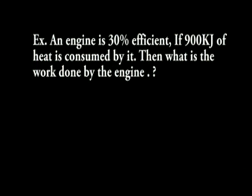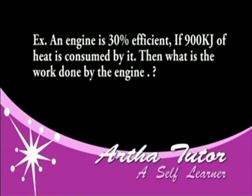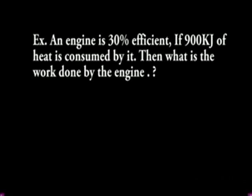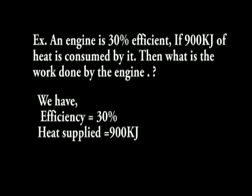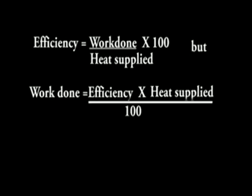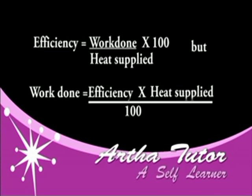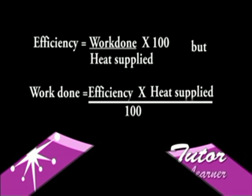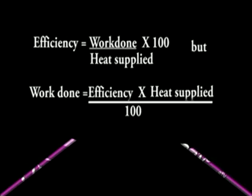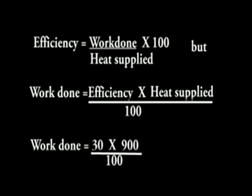It is usually expressed as a percentage: efficiency = (work done / heat supplied) × 100. Example: An engine is 30% efficient. If 900 kJ of heat is consumed by it, then what is the work done by the engine? We have efficiency = 30%, heat supplied = 900 kJ. Therefore, work done = (efficiency × total heat supplied) / 100 = (30 × 900) / 100 = 270 kJ.